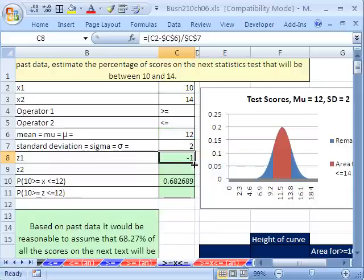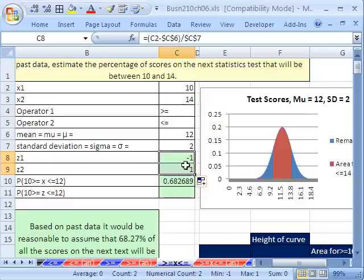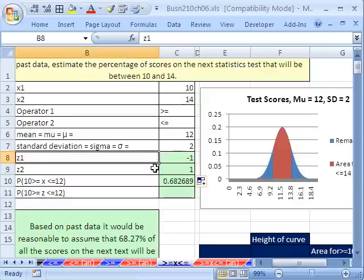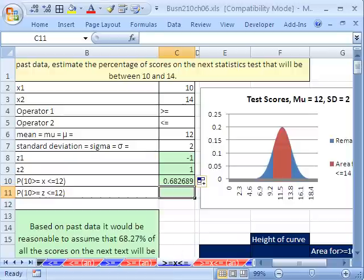And then copy it down. Oh look at that. If we've done our z's first, we would just immediately realize plus or minus 1, and we could have just said 68.